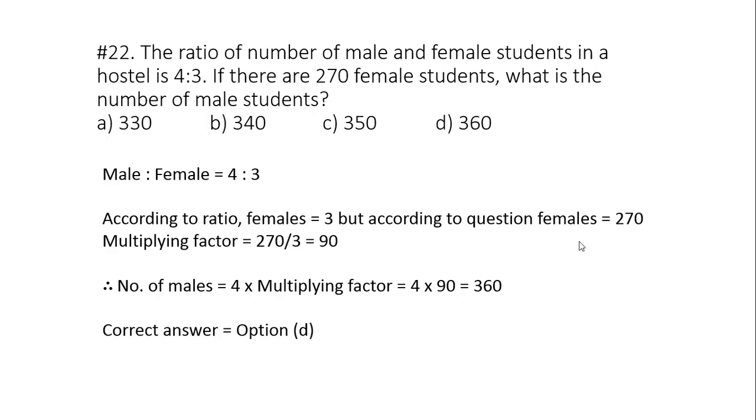Question number 22. The ratio of number of male and female students in a hostel is 4 is to 3. If there are 270 female students, what is the number of male students? According to the question, the ratio of male and female is 4 is to 3. It means there are 4 males and 3 females according to ratio. But according to question, there are 270 female. So 3 corresponds to 270. Multiplying factor is 270 divided by 3 that is 90. Now we can easily get number of male students by multiplying portion of male that is 4 with multiplying factor 90. 4 into 90 equals to 360. So right answer is option number D.